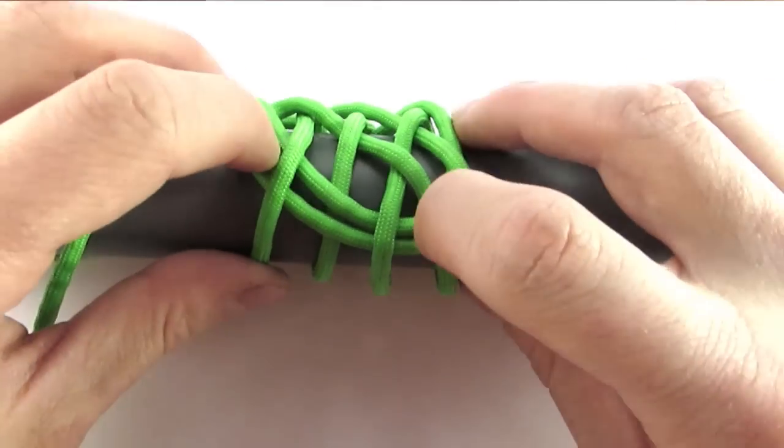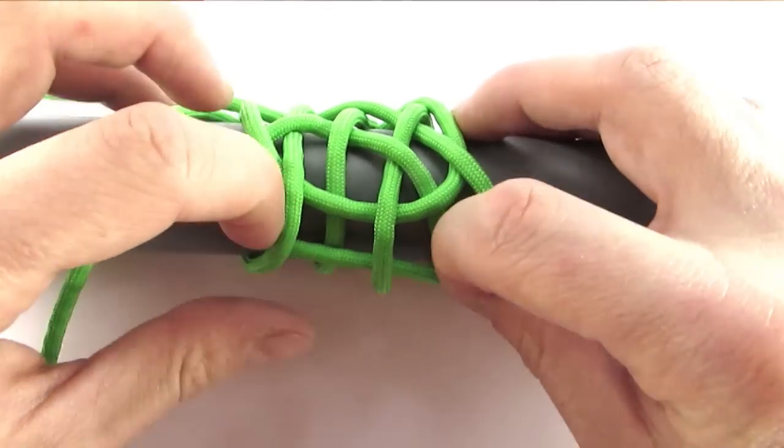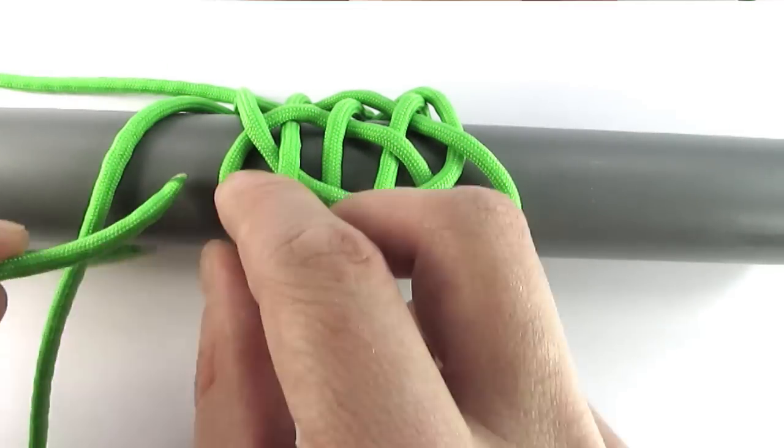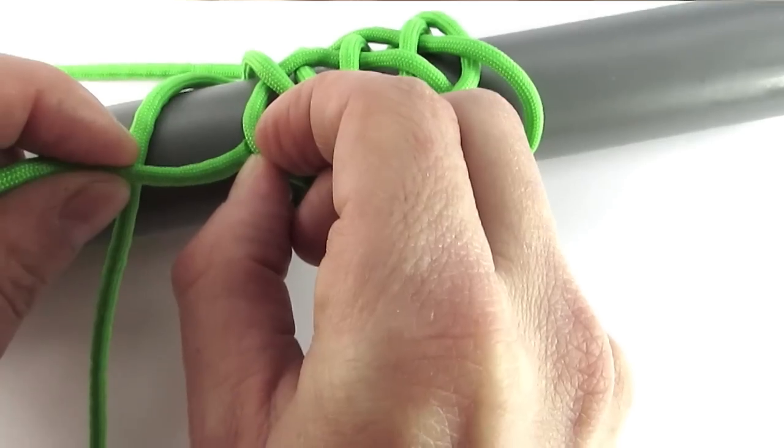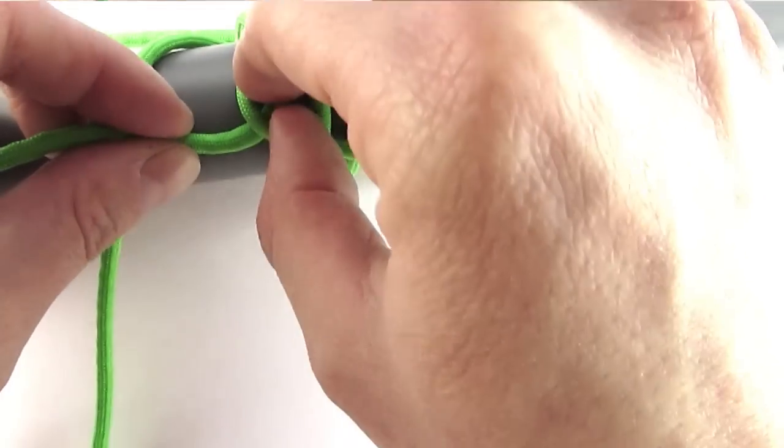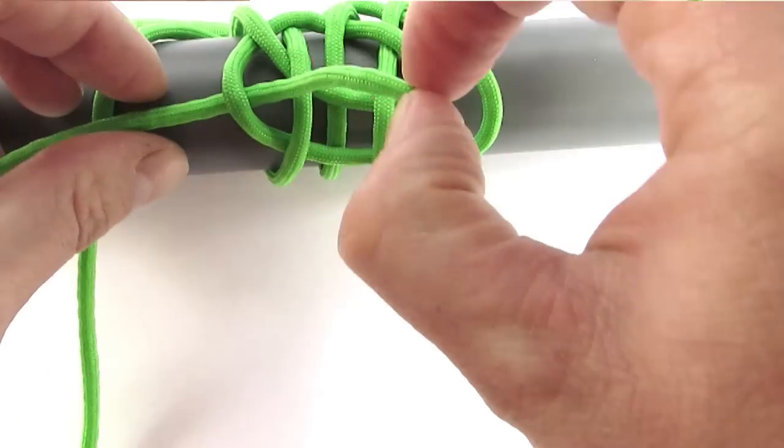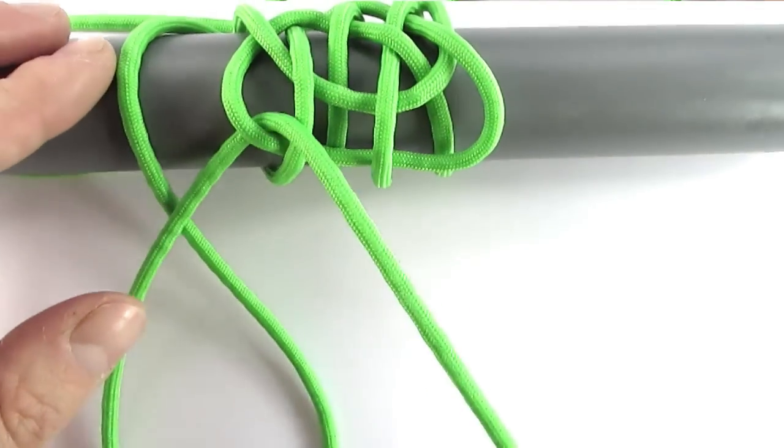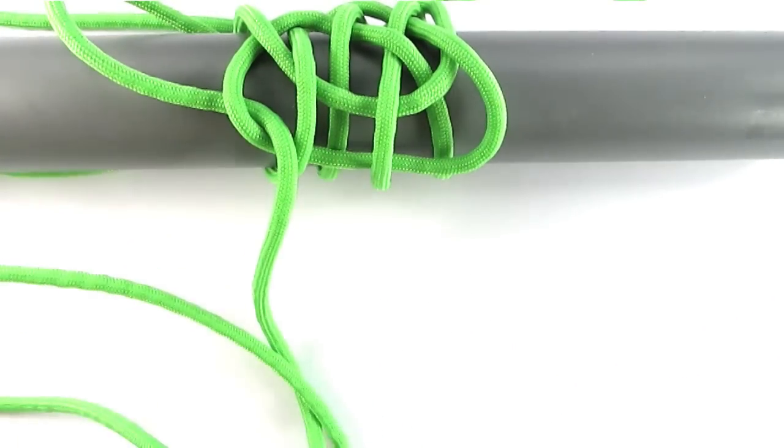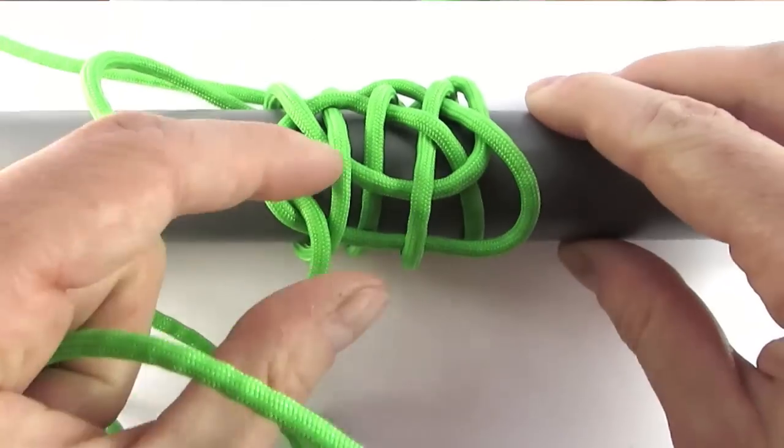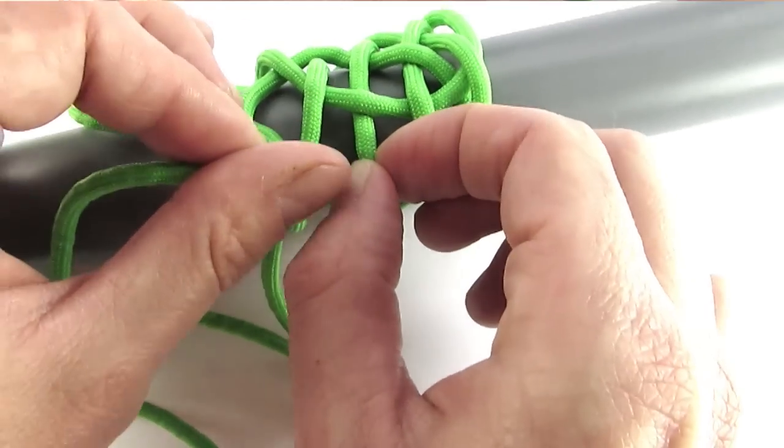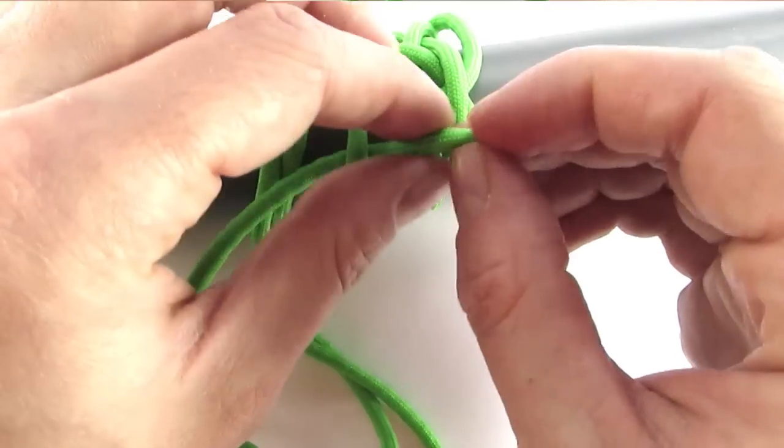Spread apart the bottom two cords and we're going to split them using our left hand. We're going to start by inserting the cord under the first cord. Then go over, under, over, under until we reach the other side. So over, under, over.